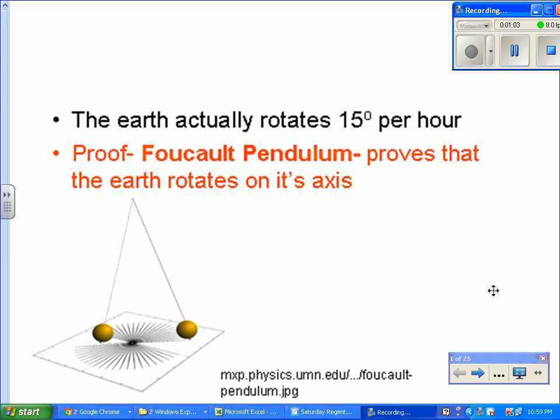Foucault Pendulum essentially just proves that the Earth rotates on its axis. The Earth actually rotates 15 degrees per hour, so that's something you should look out for.